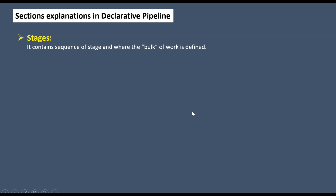The next section is 'stages', which contains a sequence of stage definitions where the bulk of the work is defined. After defining the agent, you write 'stages', and under it you define multiple individual stages. For example, four stages can represent the bulk of tasks — all defined and performed under the 'stages' section.